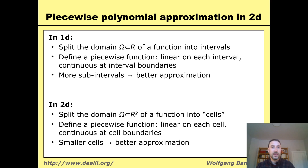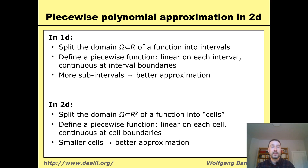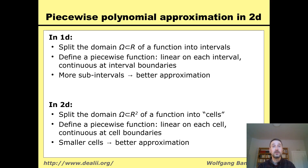I make it so that at the interfaces between two triangles, the function is continuous. And it is not difficult to see that if you make the cells smaller, you again get a better approximation.